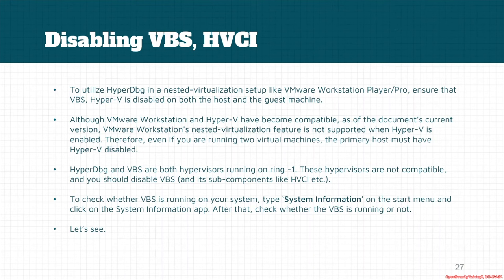Before running HyperDbg, we have to disable VBS and HVCI on the target machine. HyperDbg and VBS, or Hyper-V, are both hypervisors running at ring minus one, and these hypervisors are not compatible with each other. We should disable VBS and its sub-components like HVCI in order to run HyperDbg. If you want to use HyperDbg in a nested virtualization environment like VMware Workstation Player or Pro, we have to ensure that VBS and Hyper-V are disabled on both the host and guest machine.